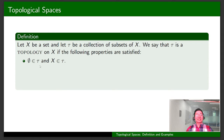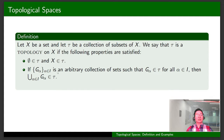The empty set is in τ and X is in τ. If {G_α} for α in I is a collection of sets such that G_α is in τ for all α in I, then their union belongs to τ.